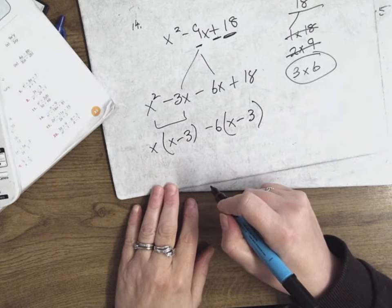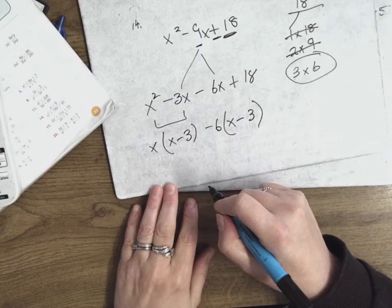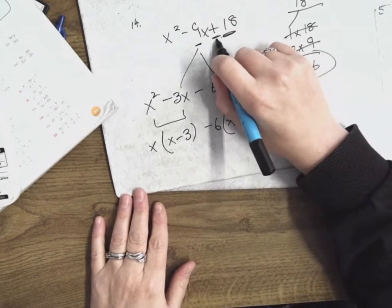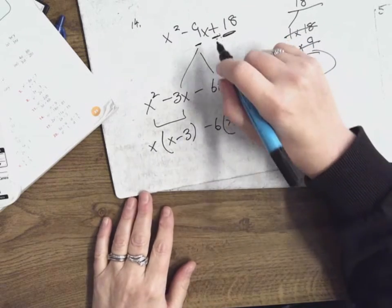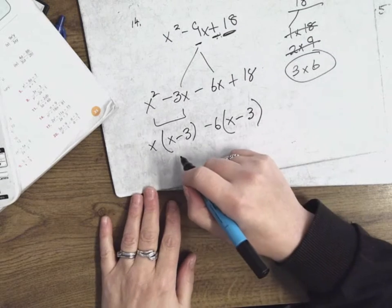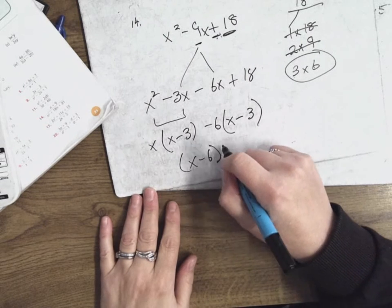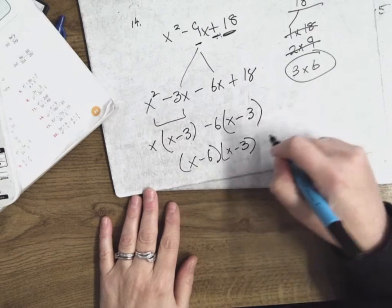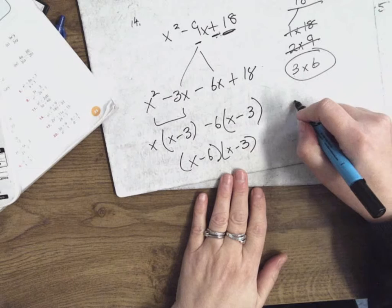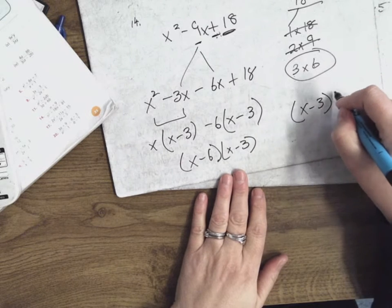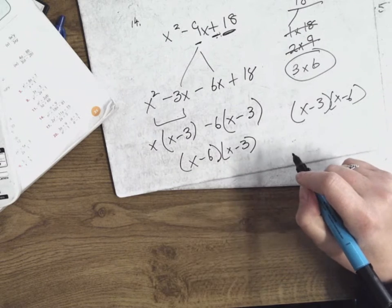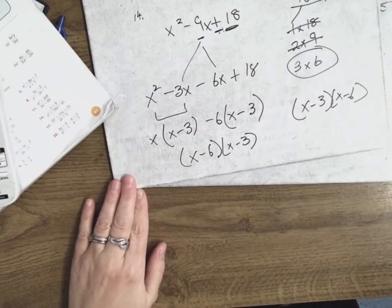The signs have to be the same because you're adding them. If that was a minus, the signs would have to be different. So my answer is x minus 6 times x minus 3. But if you put the 6 first and then the 3x, you would have ended up with x minus 3 times x minus 6, which is the exact same answer. That's number 14.